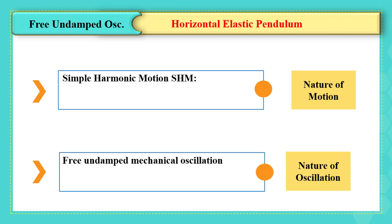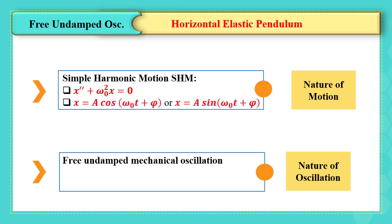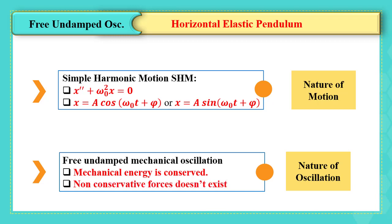Remember, we have taken before about simple harmonic motion, and we said that it is defined if the differential equation is of the form x'' + ω₀²x = 0, and x equals a·cos(ω₀t + φ) or a·sin(ω₀t + φ). For a free undamped mechanical oscillation, mechanical energy is conserved and there are no non-conservative forces.